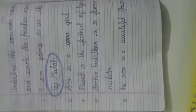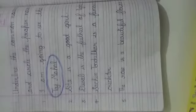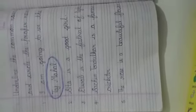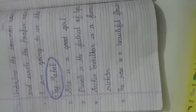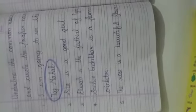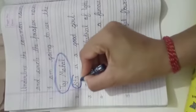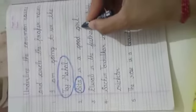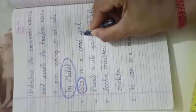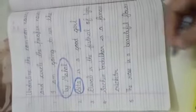And in the next sentence, 'Sita is a good girl.' Sita is a proper noun, and girl is a common noun. So we will circle Sita because that is a proper noun, and girl is a common noun, so we will underline it.